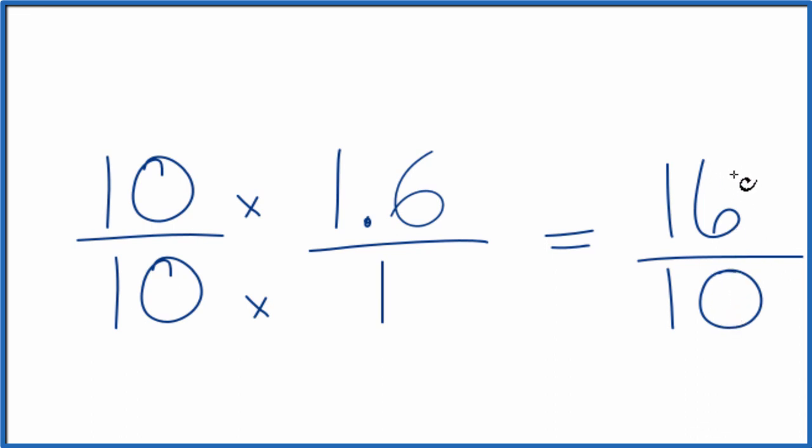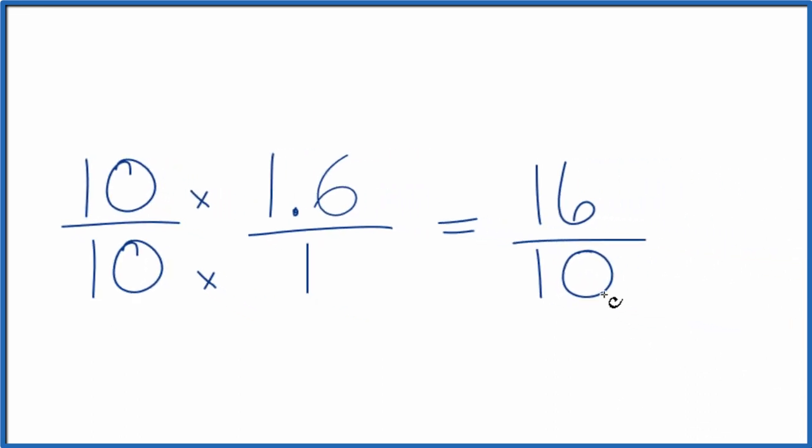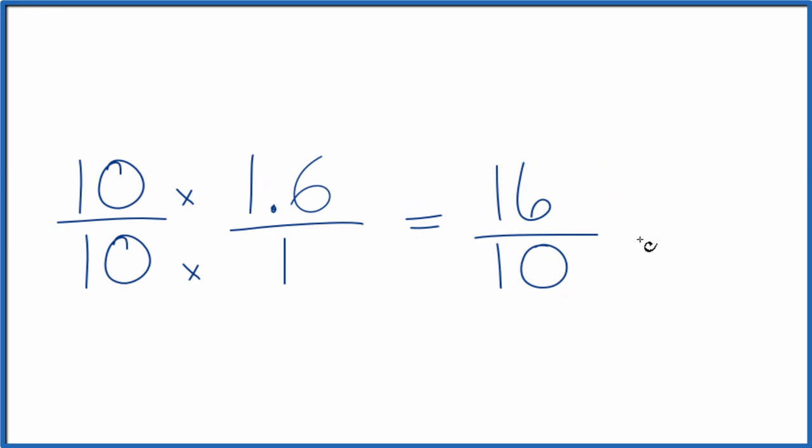It's called an improper fraction because the numerator is larger than the denominator. But we could simplify this. Looks like 2 goes into 16 and 10. So 16 divided by 2 is 8.